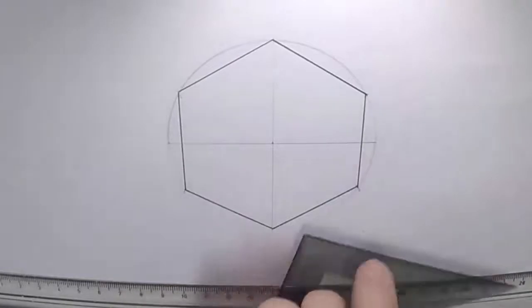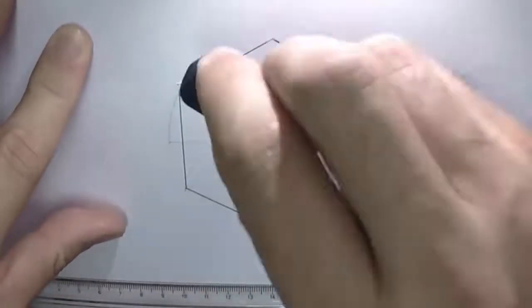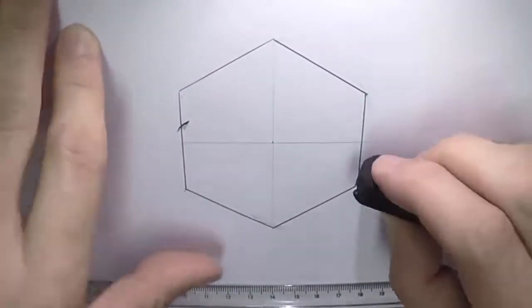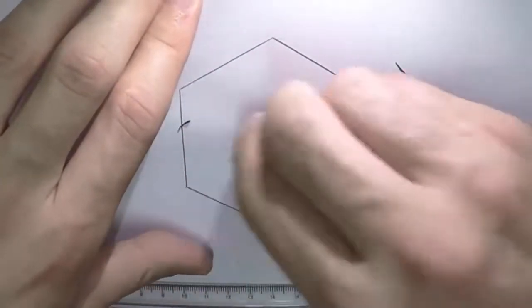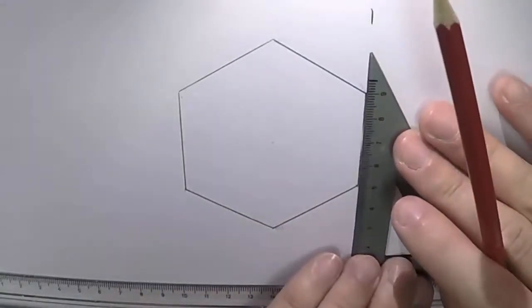Once you have joined up all the dots together, what you need to do is rub out all the construction that you have used, which was the circle and the horizontal and vertical lines. And if you go over any of the hexagon, you can just go back over it again using a ruler and a pencil.